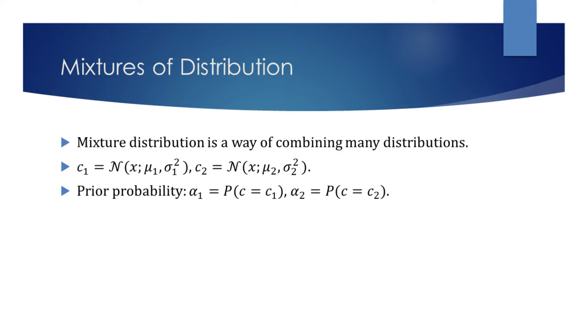The parameter which specifies the probability for which component to generate a sample is called a prior probability. In our example, the prior probability of the first component is given by alpha 1 and the prior probability for second component is given by alpha 2.